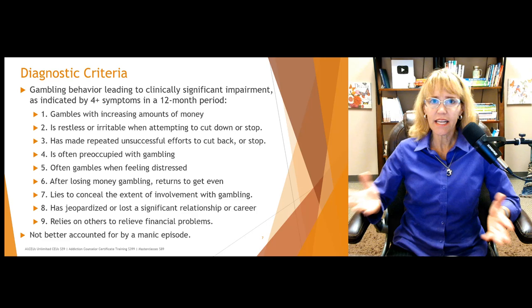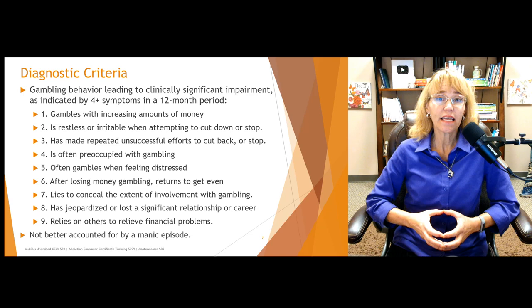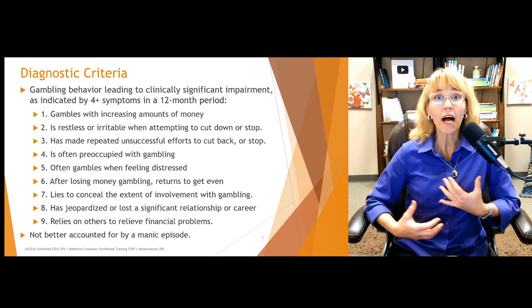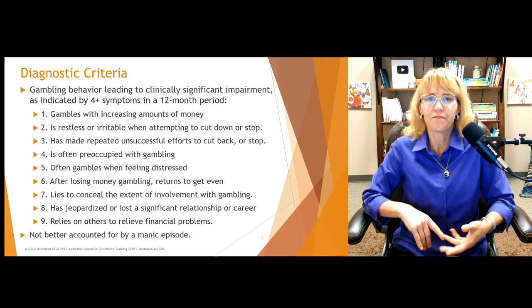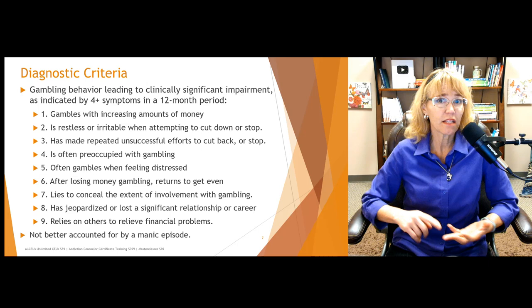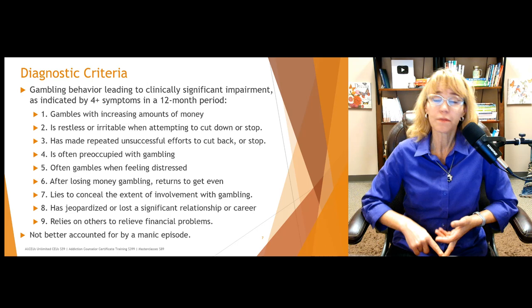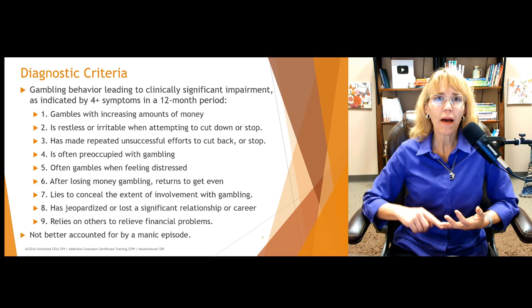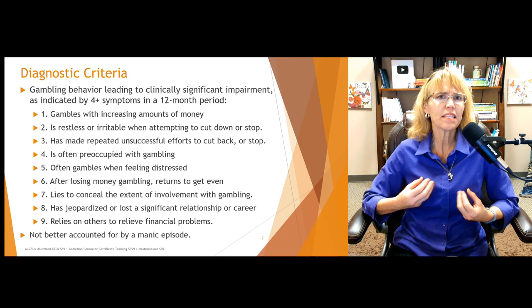The diagnostic criteria in the DSM-5-TR requires gambling behavior leading to clinically significant impairment as indicated by four or more symptoms in a 12-month period. Criteria include: gambling with increasing amounts of money to achieve the same excitement — analogous to needing more of a substance to get high; being restless or irritable when attempting to cut down or stop; making repeated unsuccessful efforts to cut back; and being often preoccupied with gambling, spending significant time thinking about it — similar to what we see with substance use disorder.